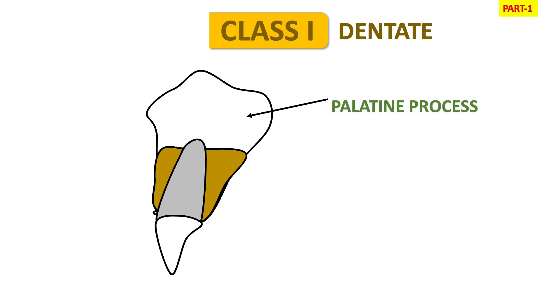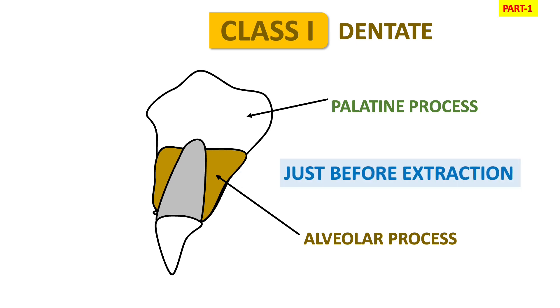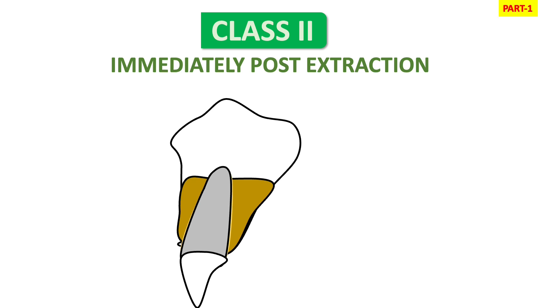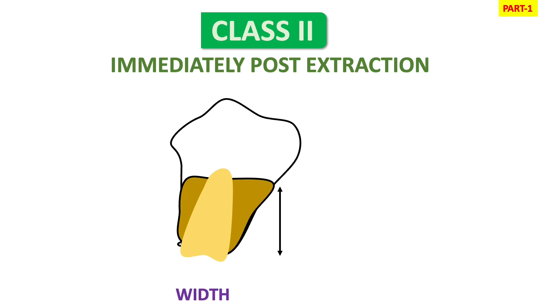Class 1 is dentate — ridges just before extraction. As you can see in the figure, we have a palatine process and the alveolar process. Class 2 is immediately post-extraction. As you can see in the figure, there is no obvious resorption in height and width. We cannot fabricate a denture in Class 2 because these are unhealed ridges immediately after extraction.